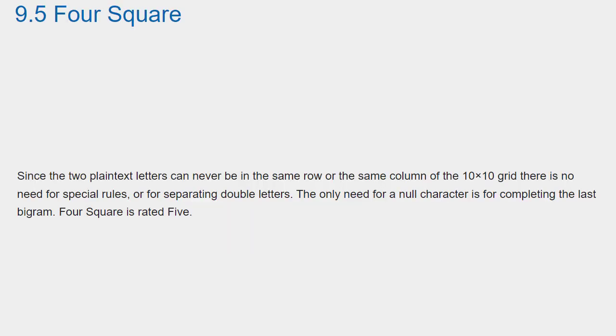Since the two plaintext letters can never be in the same row or the same column of the 10x10 grid, there is no need for special rules or for separating double letters. The only need for a null character is for completing the last bigram. Four Square is rated 5.